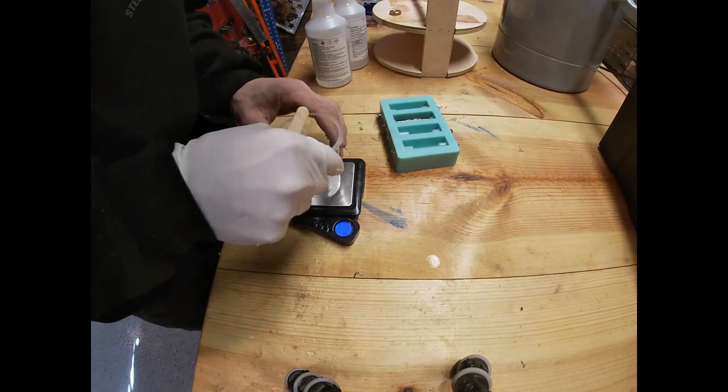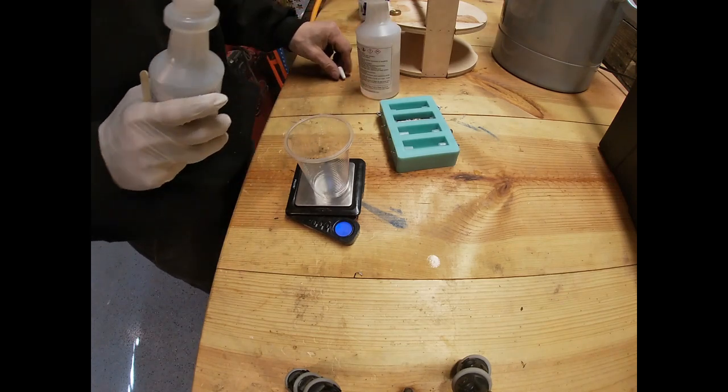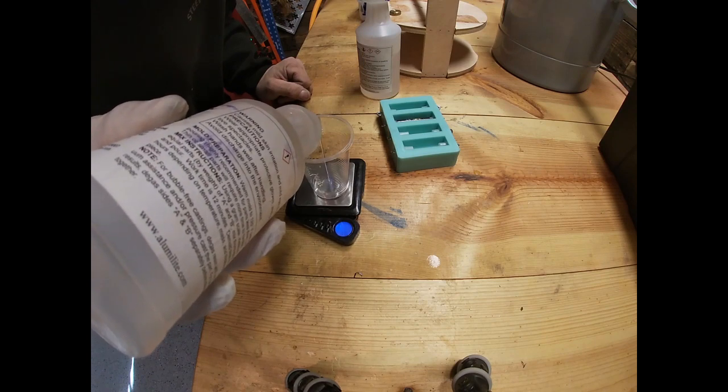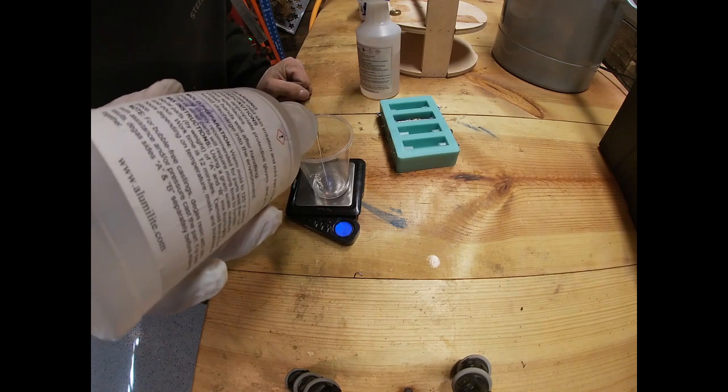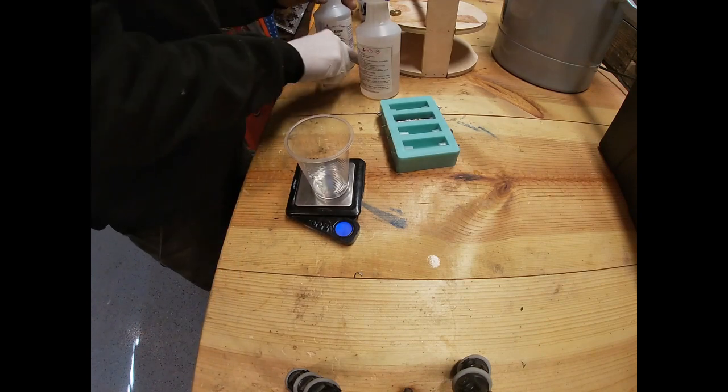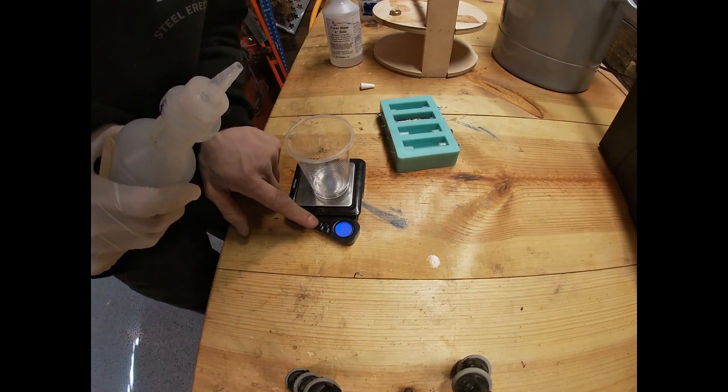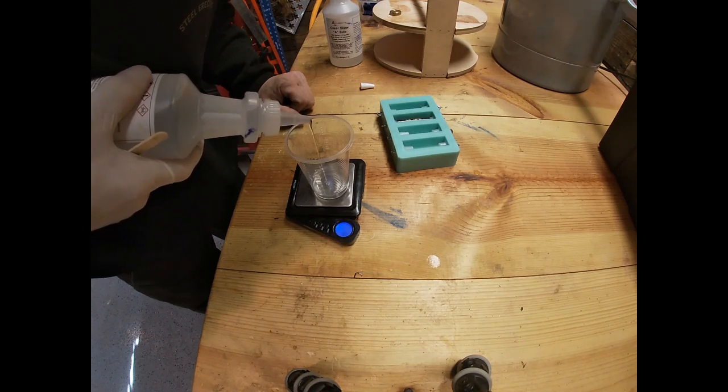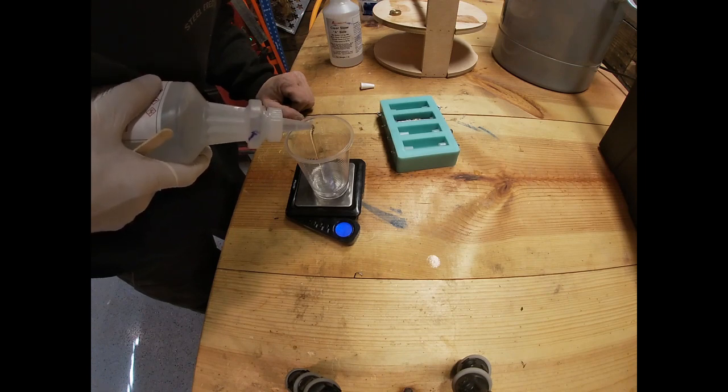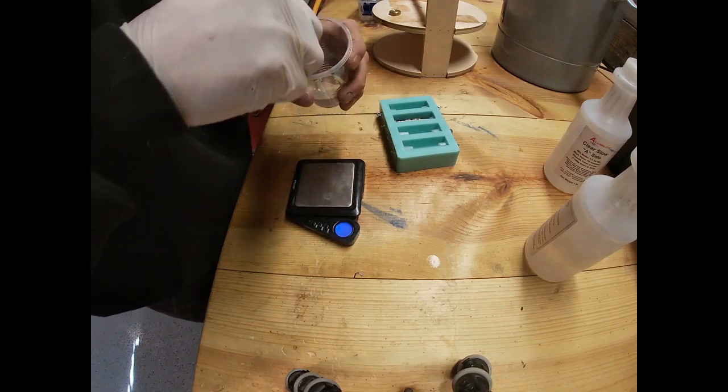So we'll get this resin mixed up here. I'm just going to do it in one cup. Normally I would pour my A and B into separate cups, but I'm just doing one little pour here. So we'll start with our A. Like I said, we'll just need 25 grams, so I'll do 12 and a half of each, or 13. Went a little bit over. And I can tare it and I'll bring it back to zero. Do another 13 of the B.